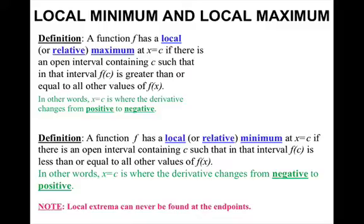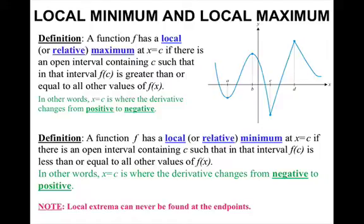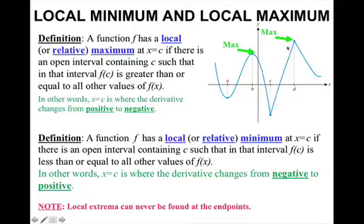Note: local extrema can never be found at the endpoints. Looking at a picture, the local maximums would be at b and at d, because there you can see the slopes of the tangent lines go from positive to negative. The local minimums are where the derivative goes from negative to positive.